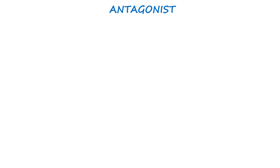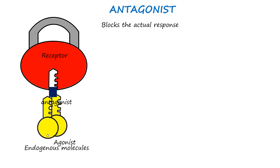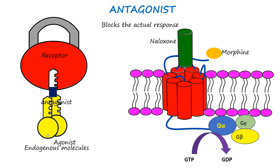Antagonists bind to receptors but do not activate them. Instead, they block the receptor and prevent other agonists — like endogenous hormones or neurotransmitters — from binding and exerting their effects. Using the lock-and-key analogy, the antagonist is a key that plugs into the lock, preventing the true key from turning it. Naloxone is the prime example: it binds to mu opioid receptors without activating them, effectively displacing opiates like morphine and reversing their effects, making it a lifesaver in cases of opiate overdose.